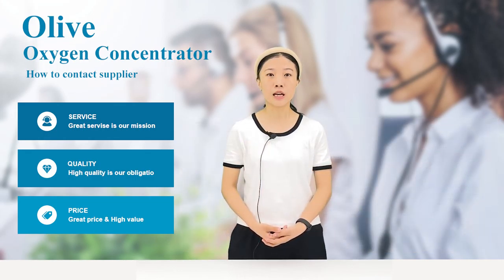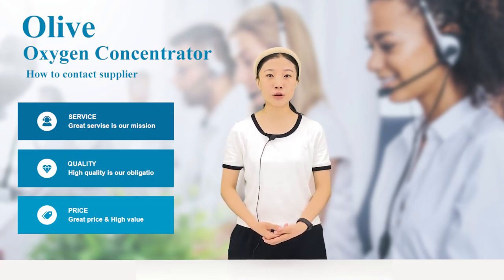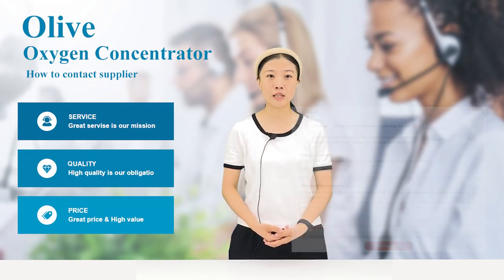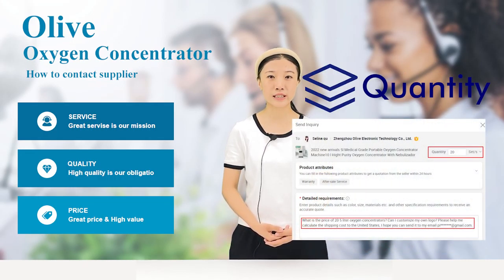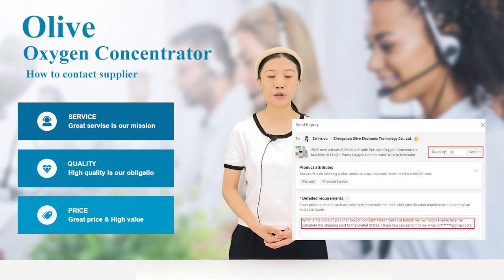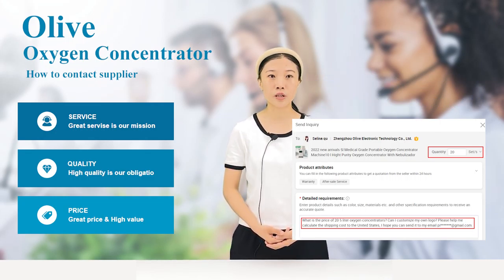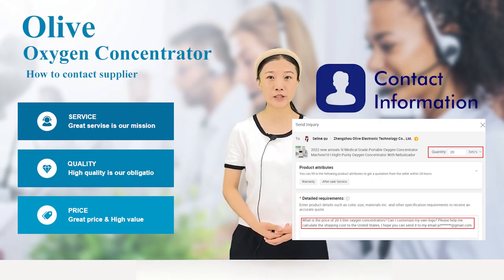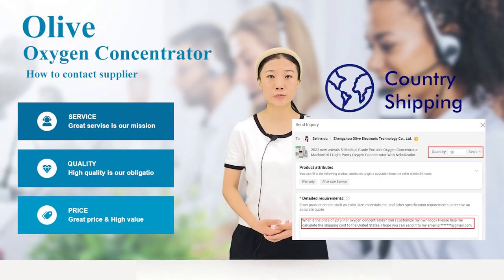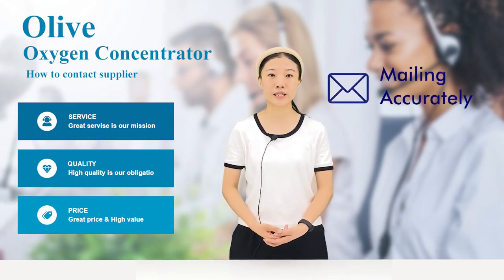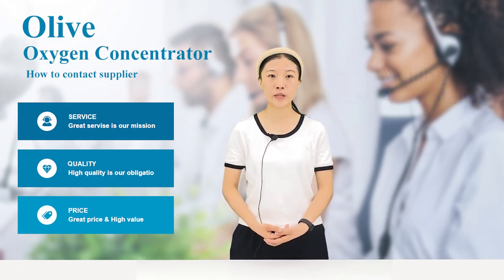Step 2: After clicking Contact Supplier, the Send Inquiry page will appear. You can enter the required product details such as price, quantity, model, etc., and customization requirements, including your contact information and the country you want to ship to, so that we can provide accurate pricing and shipping information.